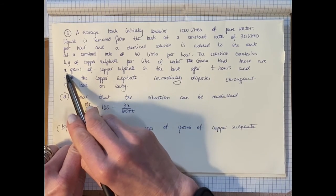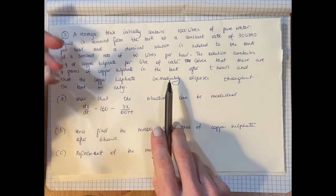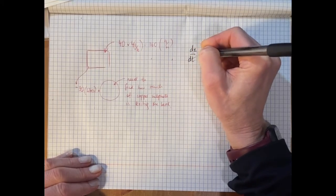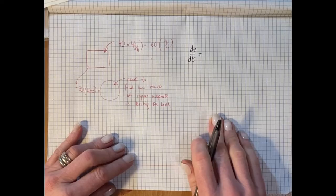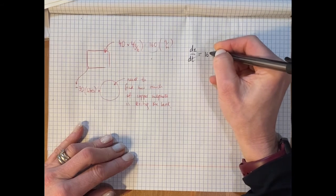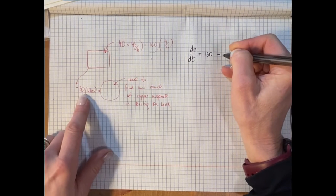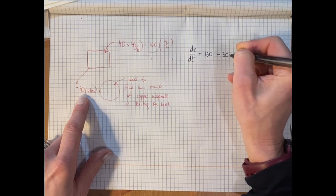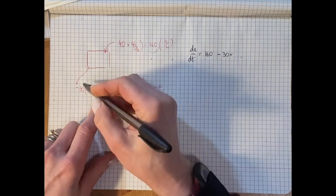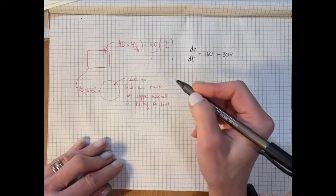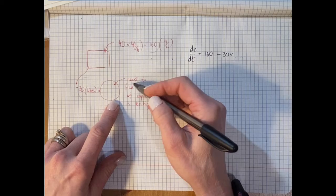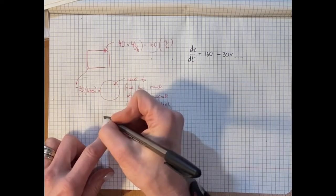Every unit of time, 160 grams goes in, but some amount escapes — 30 litres times some concentration. We need to work out what that concentration is — how much of x escapes altogether. We need to find how much copper sulphate is in one litre.